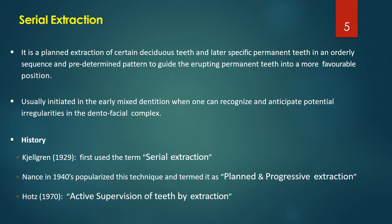What is serial extraction? It is a planned extraction of certain deciduous or permanent teeth in an orderly sequence to aid or guide the erupting permanent teeth into a more favorable position. It is usually initiated in the early mixed dentition when developing irregularities in the dentofacial complex are recognized. It was Gelbrin in 1929 who first used the term serial extraction. Nance in the 1940s popularized the technique, calling it planned and progressive extraction.